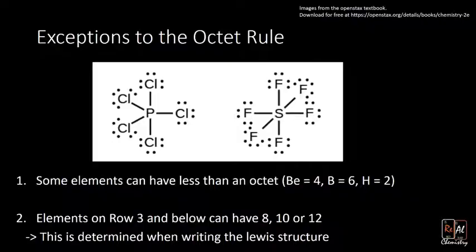The exceptions to the octet rule also can go bigger than an octet. We've gone over the first type where elements can have less than an octet. The other case is where elements have more than an octet, and they can have eight, ten, or twelve. This happens for elements on row three of the periodic table and below. And you decide if they want eight, ten, or twelve just by drawing the structure and seeing how many you need to add.